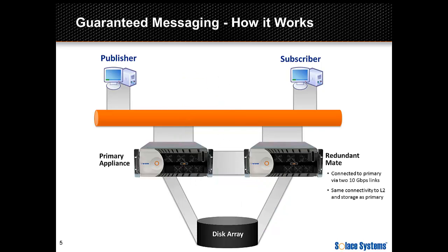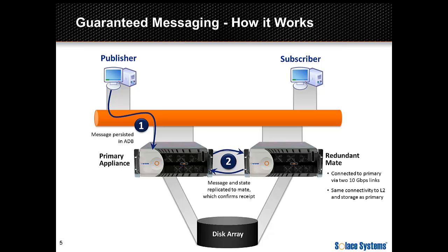Let's look at some message flow to really understand what this all means. A publishing application will send a message into the primary Solace appliance. When a message is received from the publisher, the Solace appliance looks up the destination and transfers the message payload along with the destination to the ADB using direct memory access. This is much faster than even flash memory, enabling this transfer to happen with very low latency. Simultaneously, the FPGA on the ADB is also transferring a copy of the message payload and destination queues to the ADB on the standby system.